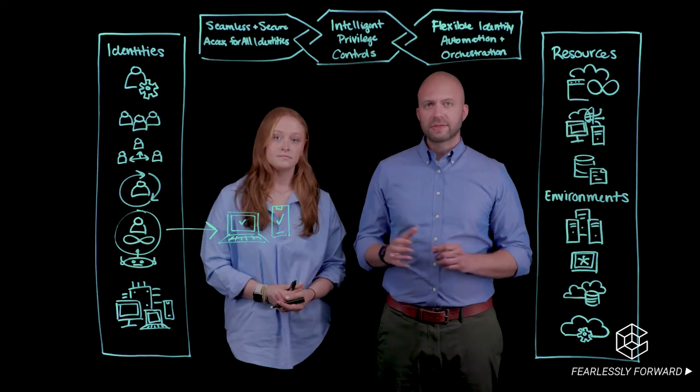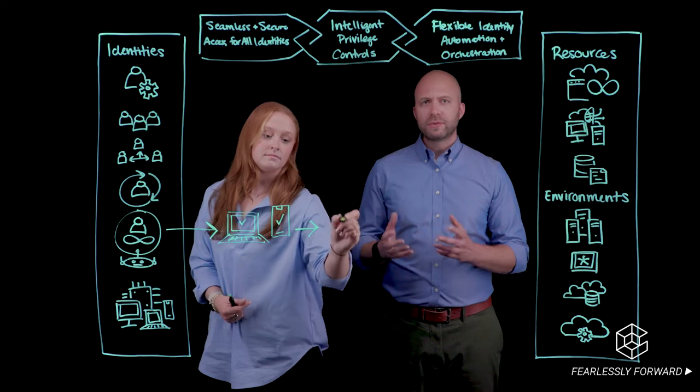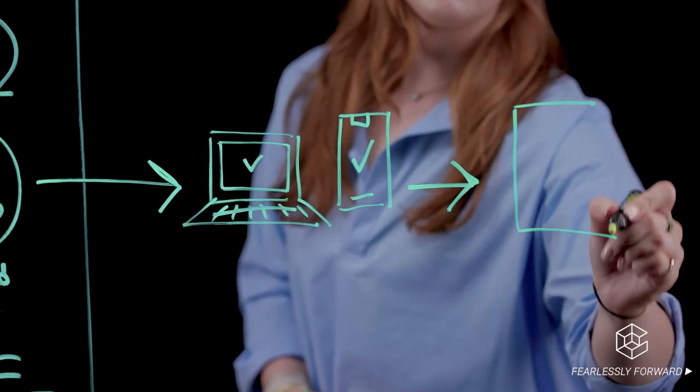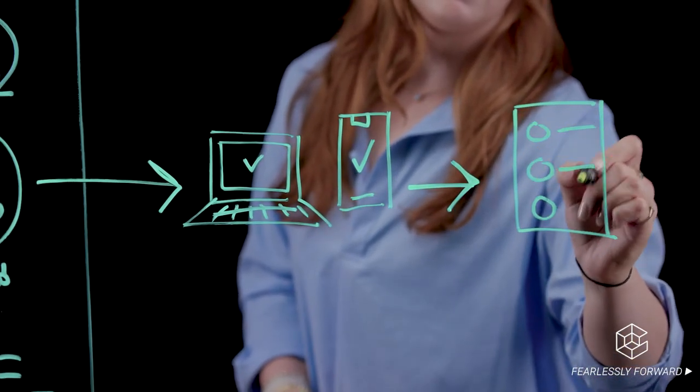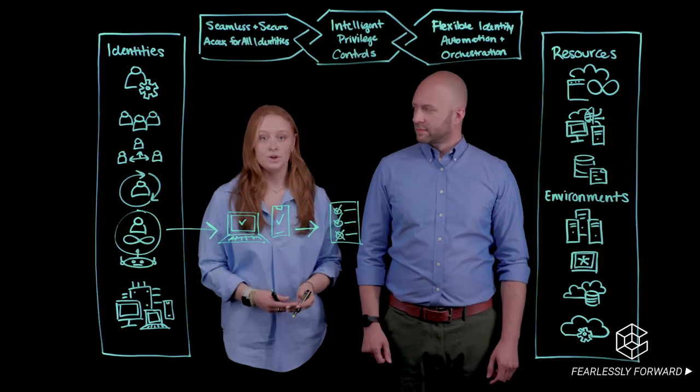Next up, let's apply those intelligent privilege controls from the heart of our framework. We need to ensure Rachel can get into her cloud workspace, but only with the least amount of privilege and for the least amount of time needed to perform essential job tasks. All right, so Rachel's in, she's writing code.